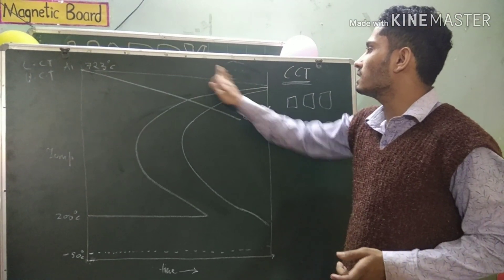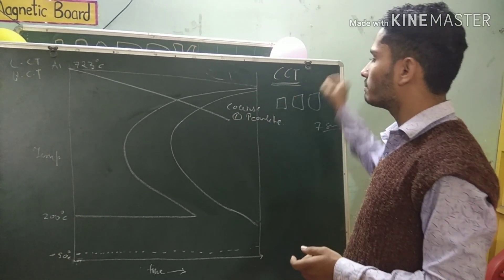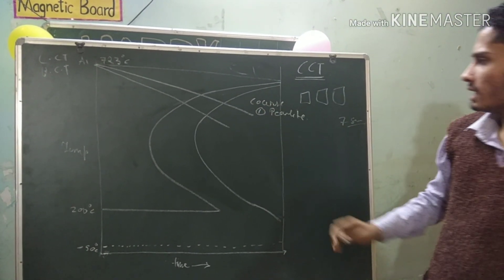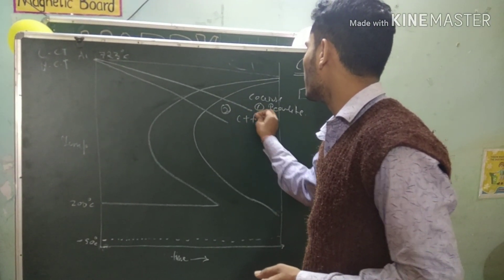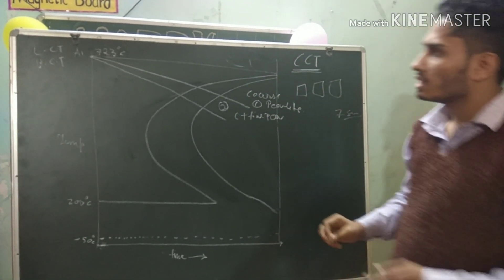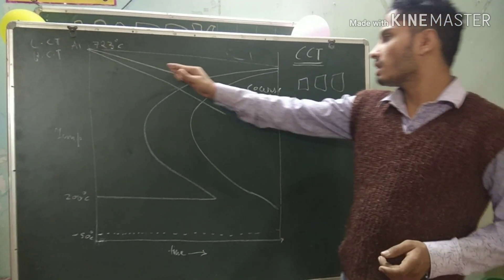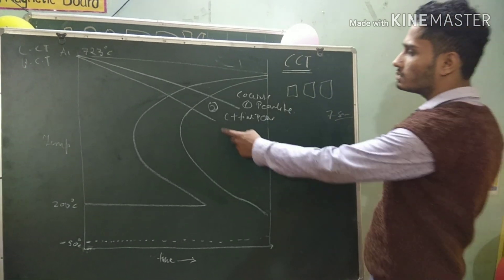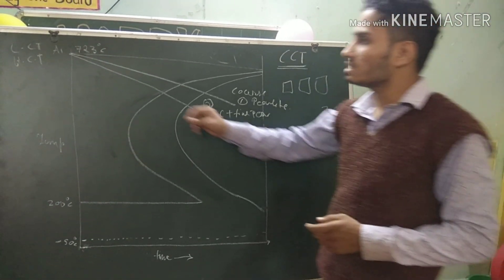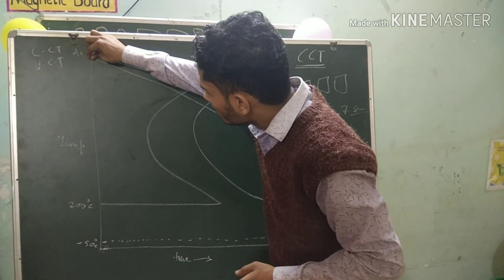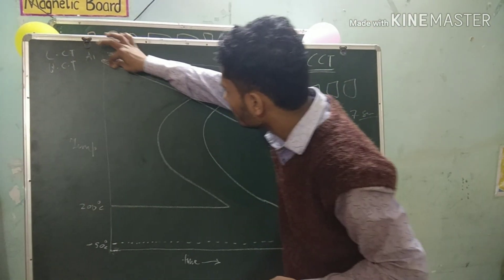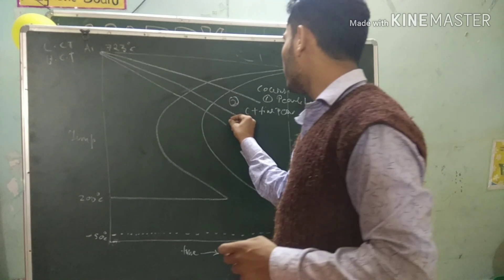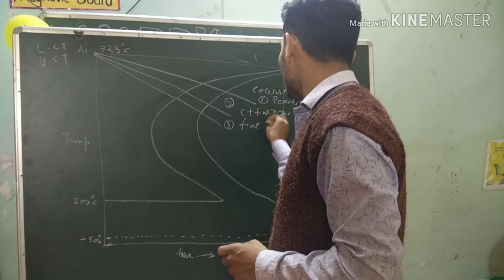After this, we take another sample and cool it with a slow rate but a little bit faster compared to sample 1. Then what we get is a mixture of coarse plus fine pearlite, when the temperature is below 723°C and the cooling rate is small but slightly faster than 1. After this we take a third sample and cool it again — not very slow but at a slow rate that is faster than sample 2. What we get is fine pearlite.